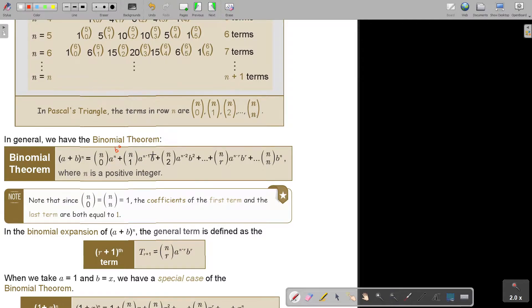So this is N minus R, and this is R, and this is N for the general binomial. N minus R is this term, and then this is R, where N is a positive integer. Note that since N choose 0 equals N choose N equals 1, the coefficients of the first term and the last terms are always both equal to 1.